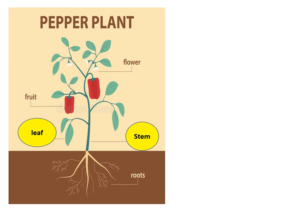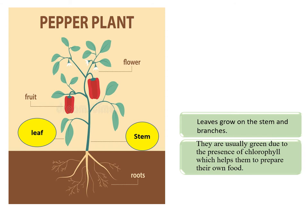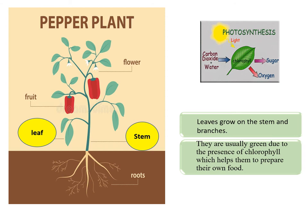This animated picture is showing you the movement of minerals and water from root to stem and leaf. Next is the leaf. Leaves grow on the stem and branches. They are usually green due to the presence of chlorophyll, which helps them to prepare their own food. This picture shows you how plants form their own food by the photosynthesis process. Here carbon dioxide comes from the atmospheric air, water comes from the soil by root through the stem, and with the presence of sunlight and chlorophyll, leaves can produce their own food in the form of carbohydrate or sugar. Oxygen gas is also released.